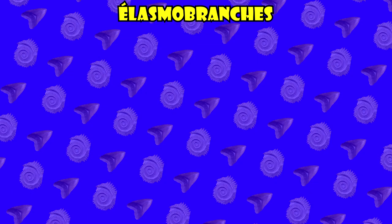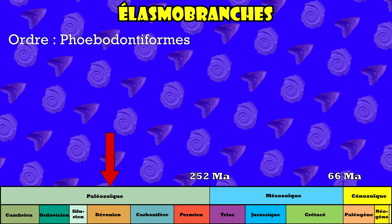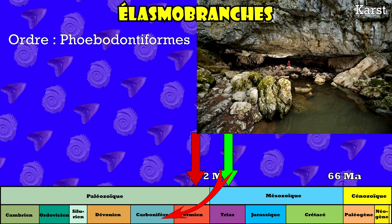Tout comme les homalodontes, les phébodontiformes est un ordre qui est apparu au Dévonien, mais qui a perduré jusqu'au Permien. Certaines dents ont été trouvées dans des dépôts triassiques, mais ces dents datent bien du Carbonifère. Ces dépôts ont été remobilisés dans ce que l'on appelle un karst, qui lui s'est formé au Trias, mélangeant ainsi des faunes du Trias et du Carbonifère.